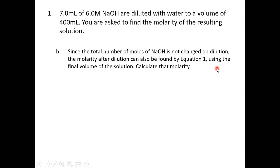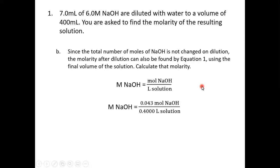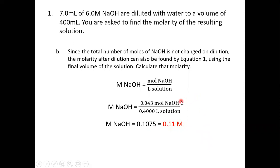We know the mole value of the sodium hydroxide and we know the final volume. That final volume is 400 mL, which we convert to liters before the calculation. Notice that our answer is to two significant figures because we are limited by the significant figures in our mole calculation for sodium hydroxide.